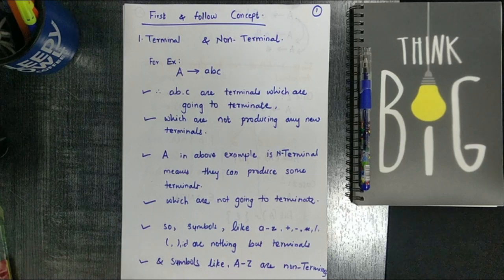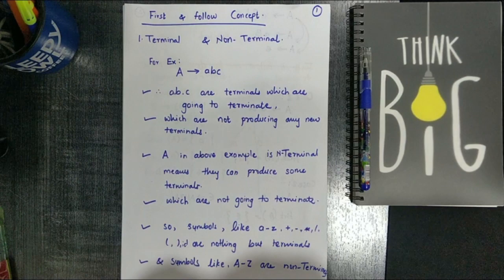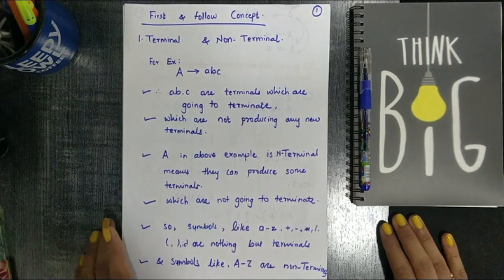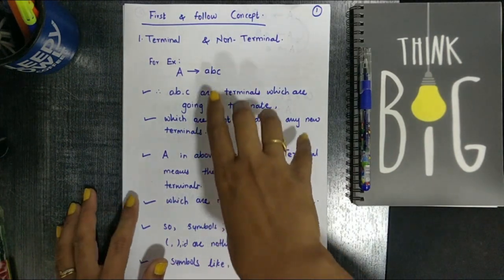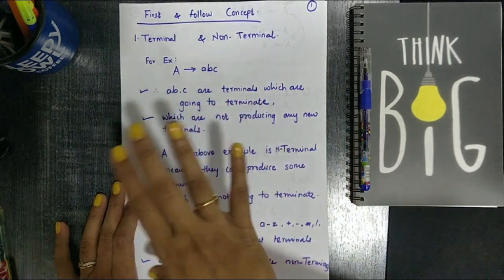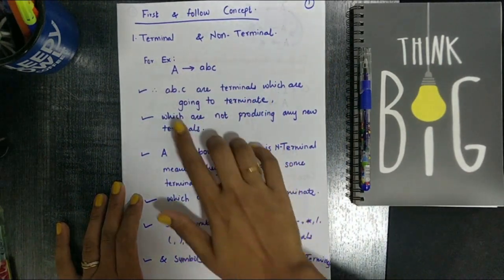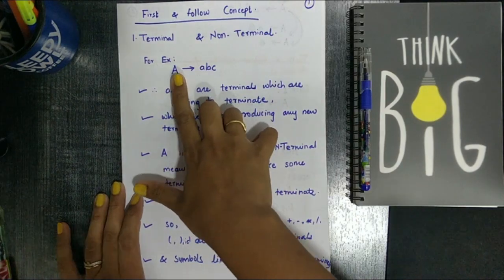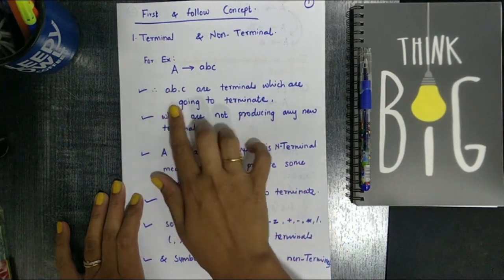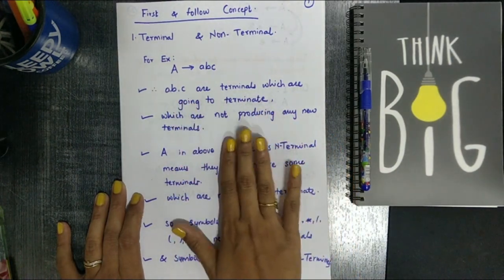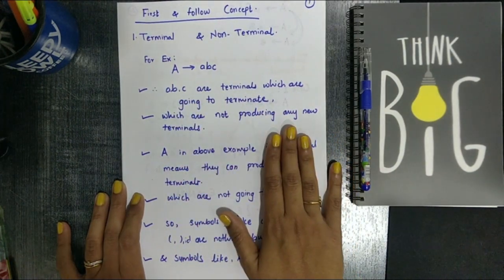Terminal symbols are nothing but the end symbols which cannot be further extended — they are going to terminate, that's why they are known as terminals. Non-terminals, on the other hand, are capital letters — you can recognize them as variables. Non-terminals are symbols which are not going to terminate on their own; they keep producing new terminals.